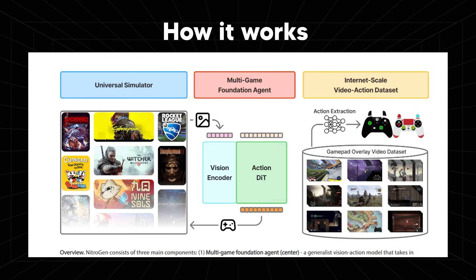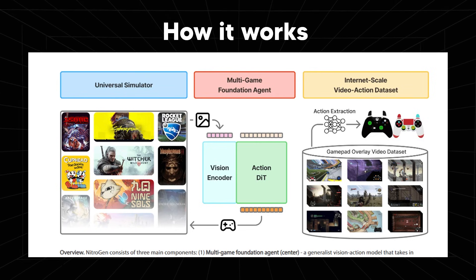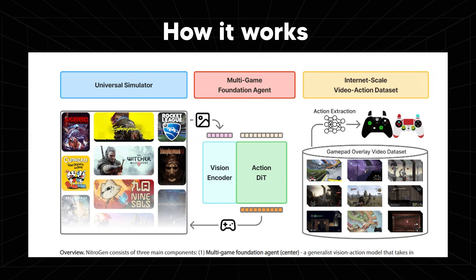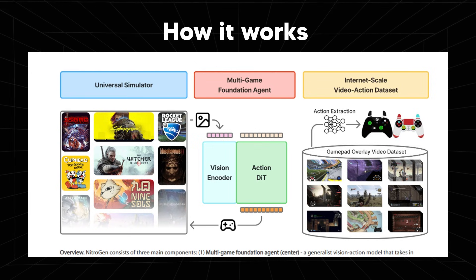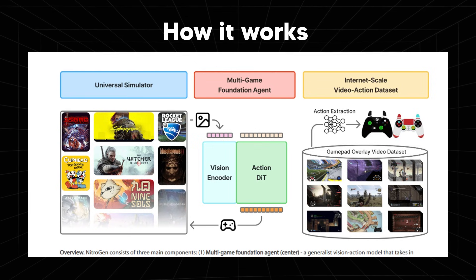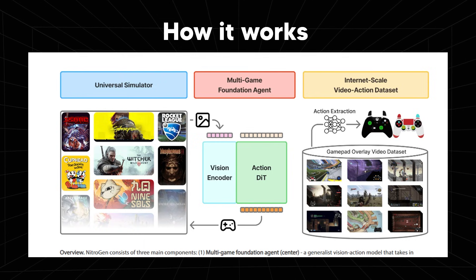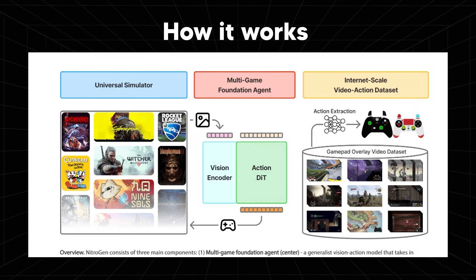So how does this AI agent actually work? This slide shows how the entire agent was built and trained to become a generalist gaming agent. The agent has three pillars which all reinforce each other: the Universal Simulator, which is how the agent plays the games; the Multi-Game Foundation Agent, which is the brain; and the Internet Scale Video Action Dataset, which is how it learns.